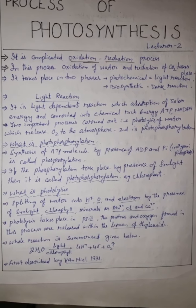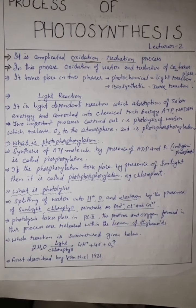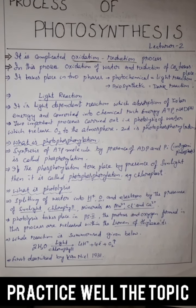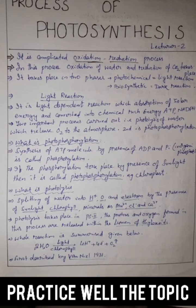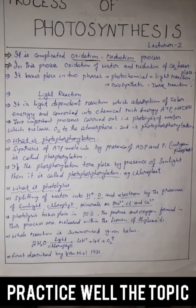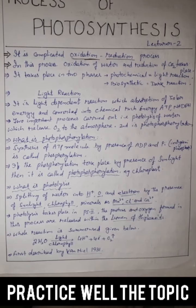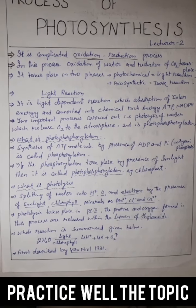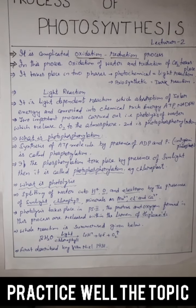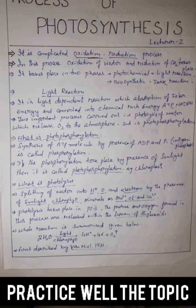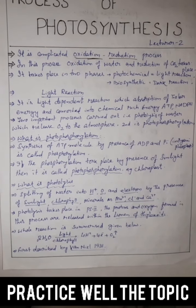We will first discuss about the light reaction. What is light reaction? It is a light-dependent reaction which absorbs solar energy and converts it into chemical energy — ATP and NADPH. Two important processes carried out: photolysis of water, which releases oxygen to the atmosphere, and the second is photo phosphorylation. Photo phosphorylation means the synthesis of ATP by presence of ADP and inorganic phosphate, and if this takes place in the presence of sunlight, it is called photo phosphorylation, which especially occurs in chloroplasts.